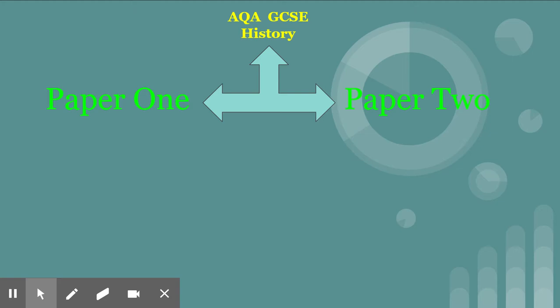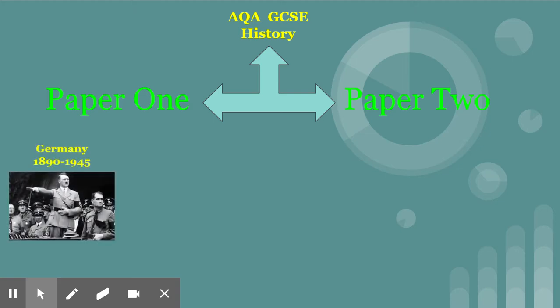Each of the two papers has two units. On paper one, you would start off by studying Germany 1890 to 1945. We look at the Kaiser, the last king of Germany, and how the First World War sees him taken out of power. Then we look at all the problems that Germany faces after the First World War during the Weimar Republic — problems with the Treaty of Versailles, with their economy, with their culture — and how all these problems lead to the rise of Adolf Hitler. Then we look at how Hitler takes power and how he uses that power to push forward his racial policies and try to turn Germany into a new Third Reich, taking over as much of Europe as he possibly can.